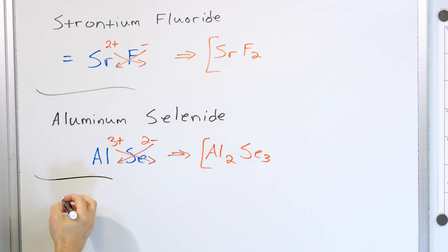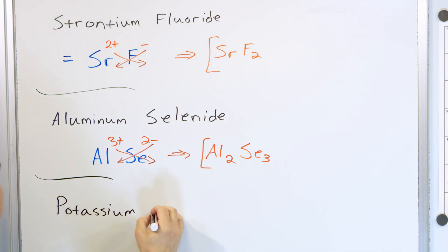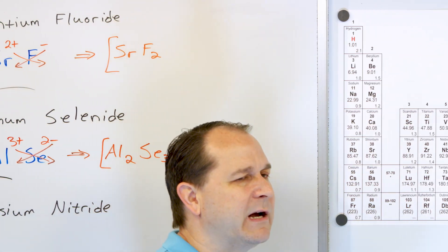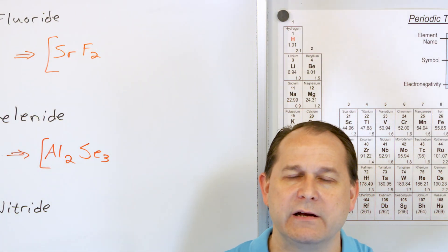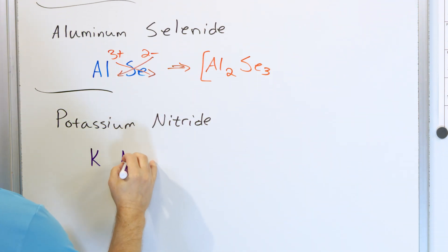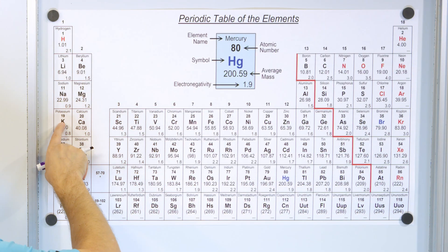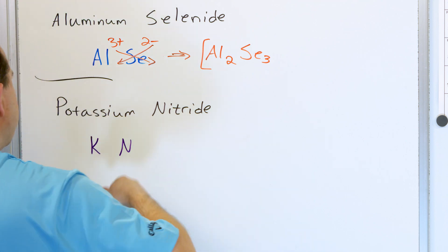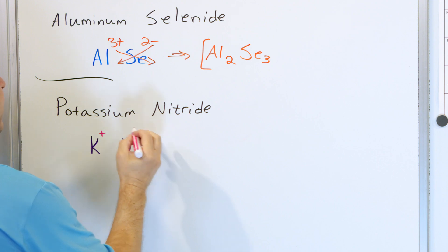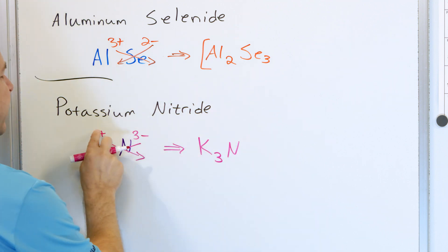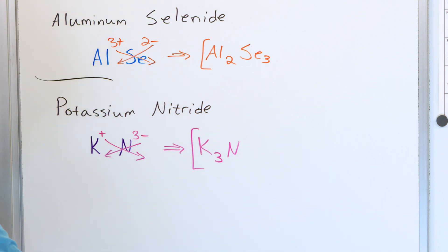Let's do potassium nitride. Potassium is a metal on the left-hand side. Nitride might look like a polyatomic ion, but it's actually just the ion form of nitrogen — nitrogen becomes nitride. Potassium is K and nitrogen is N. Potassium wants to lose an electron, so it'll be a plus one, and nitrogen wants to gain one, two, three electrons, so it'll be a negative three. Doing the crisscross, potassium gets a subscript of three and nitrogen a subscript of one: K₃N. That is the final answer.